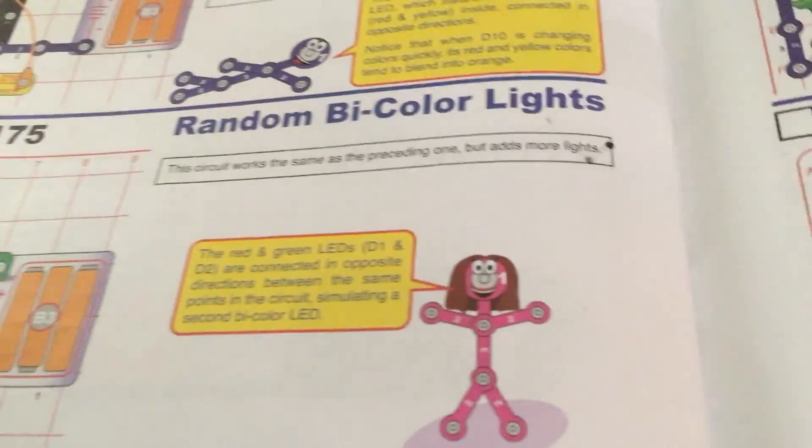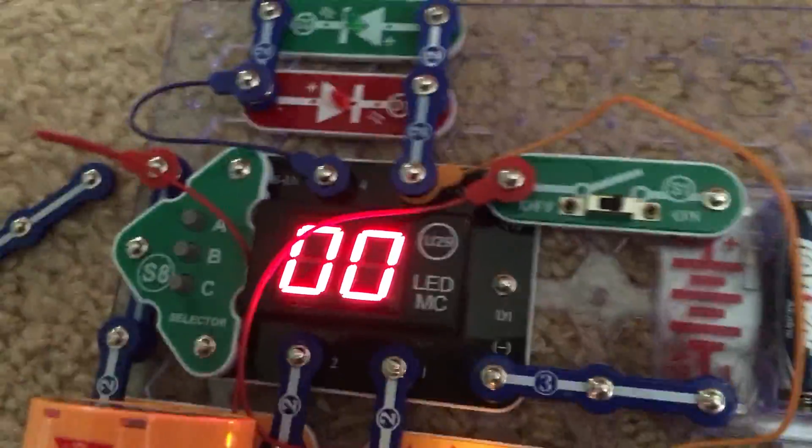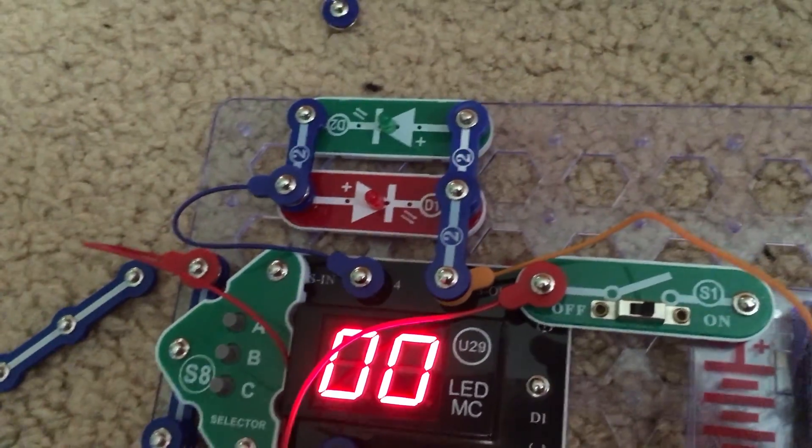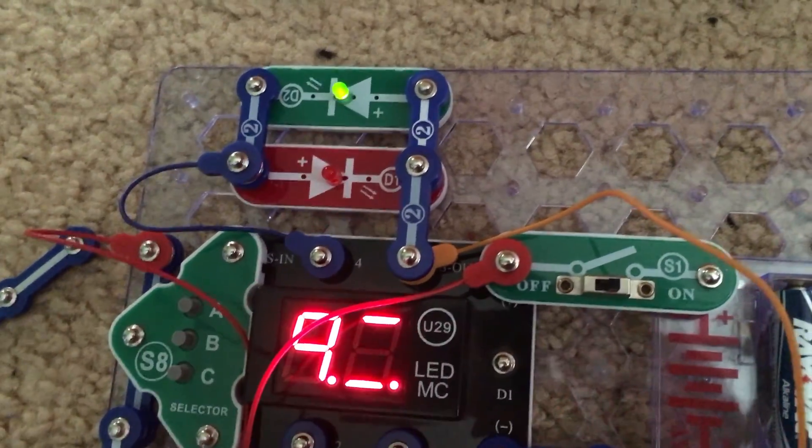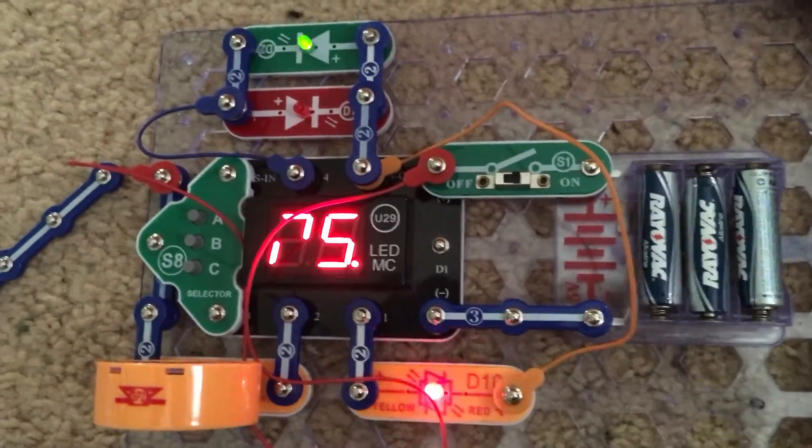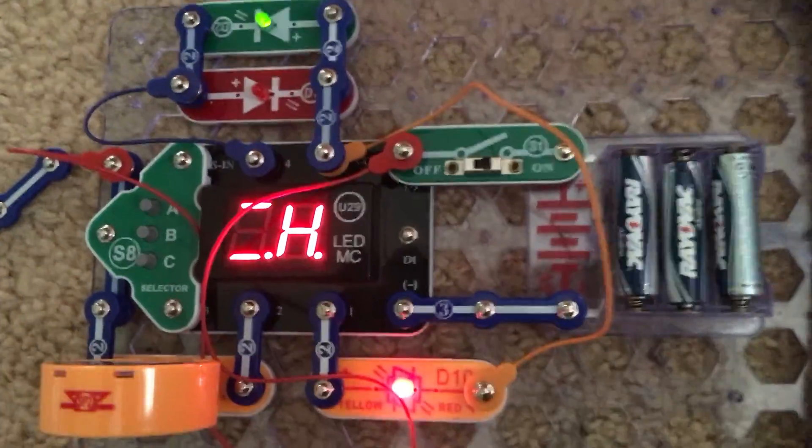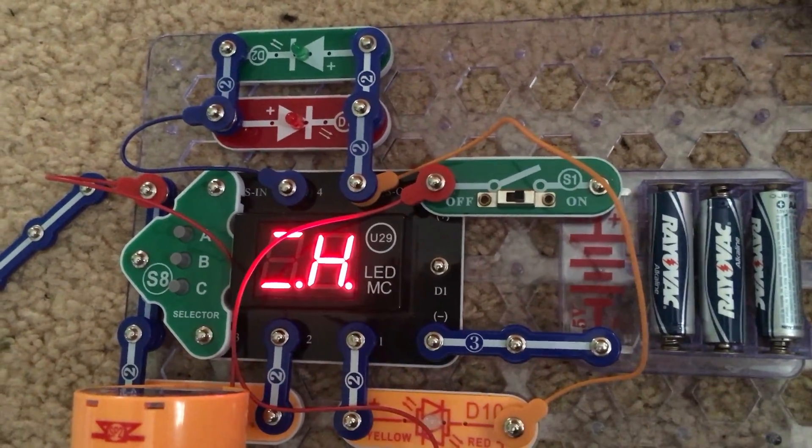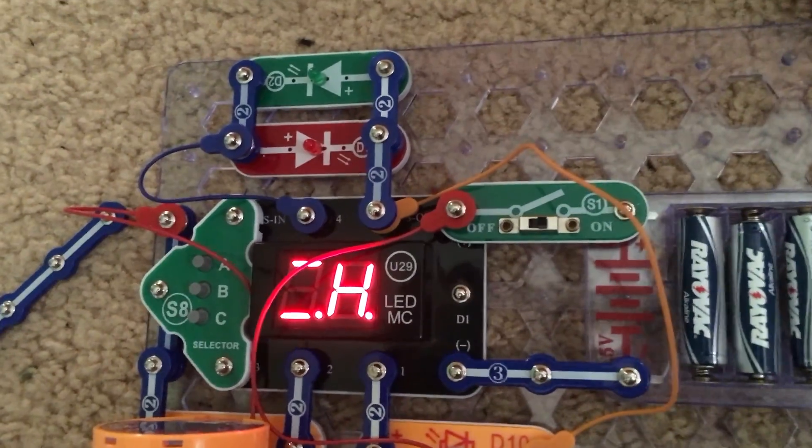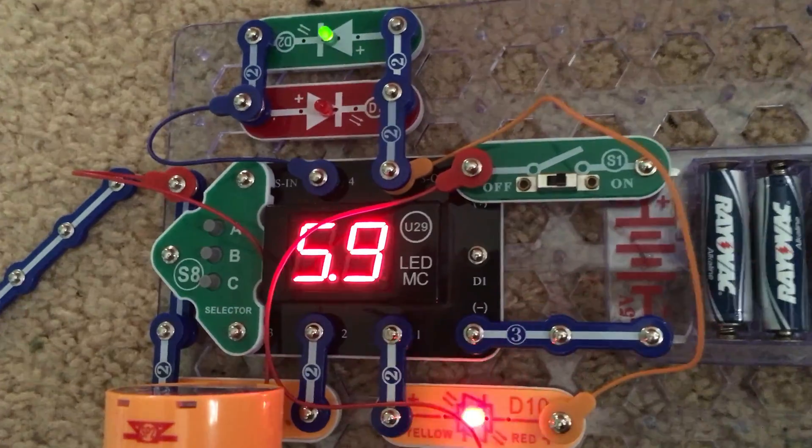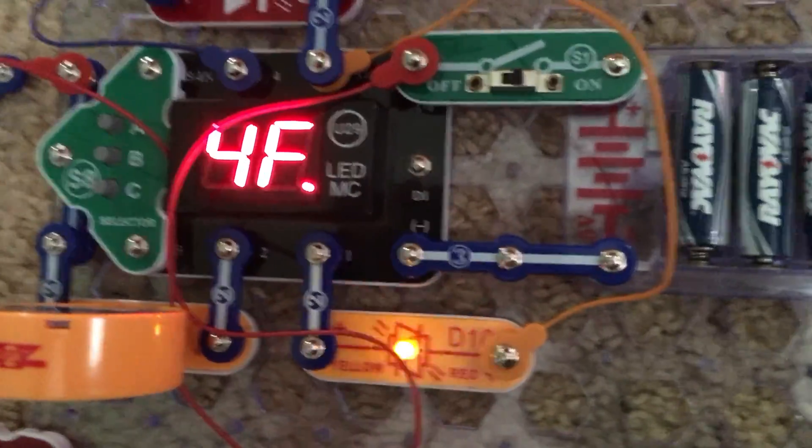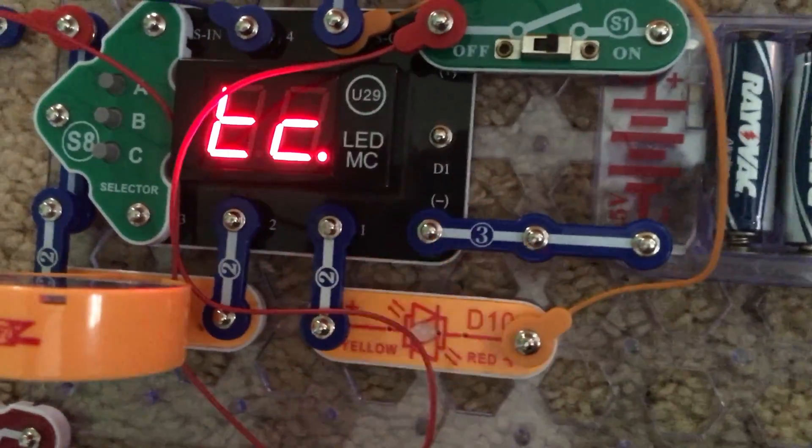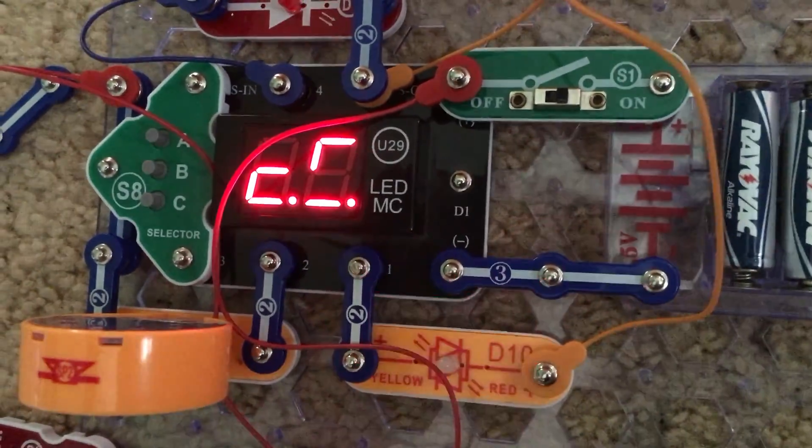175 is called random bicolor lights. This circuit is very similar to the previous one but you can see that I added the red and green LEDs to the project. And watch what happens. Either the red or green LEDs will be on at one time. They will not be on simultaneously, just like how the other bicolor LED will either be yellow or red when it is on. It will not be both colors.